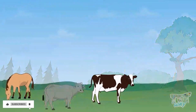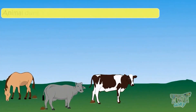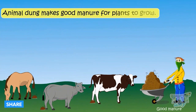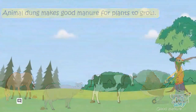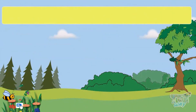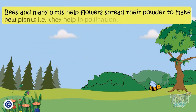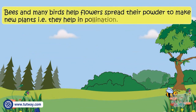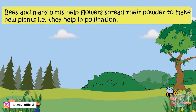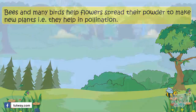Animal dung makes good manure for plants to grow. Bees and many birds help flowers spread their pollen to make new plants — that is, they help in pollination. You will learn about pollination in your next higher grades.